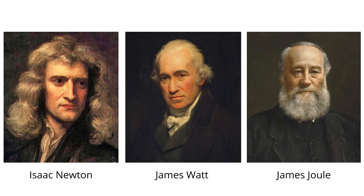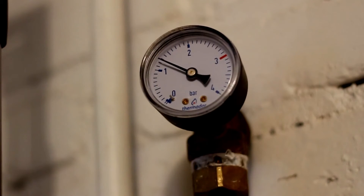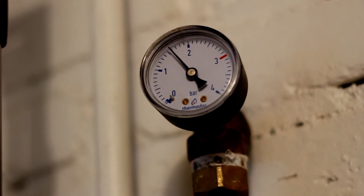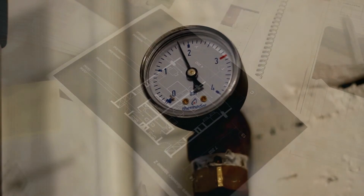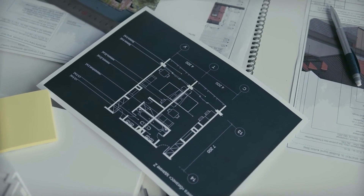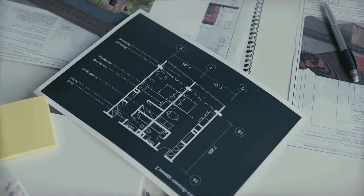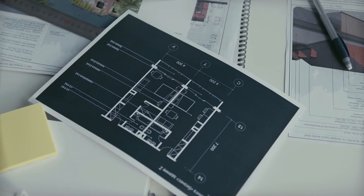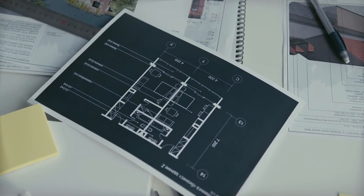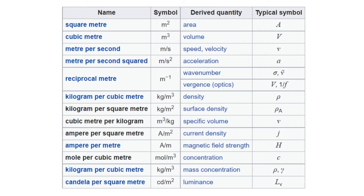All three units are named from eminent scientists. The SI is intended to be an evolving system; units and prefixes are created and unit definitions are modified through international agreement as the technology of measurement progresses and the precision of measurements improves. Here are the other SI-derived units that you may encounter in physics, chemistry, or engineering.